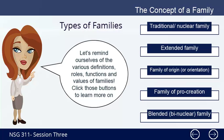3. Family of origin or orientation — the family into which an individual is born. 4. Family of procreation — the family created for the purpose of raising children. 5. Blended or bio-nuclear family — the combination of two divorced families through remarriage. We now also have single-parent families, step-parent families, same-gender families, families of need, voluntary families, and families consisting of friends.